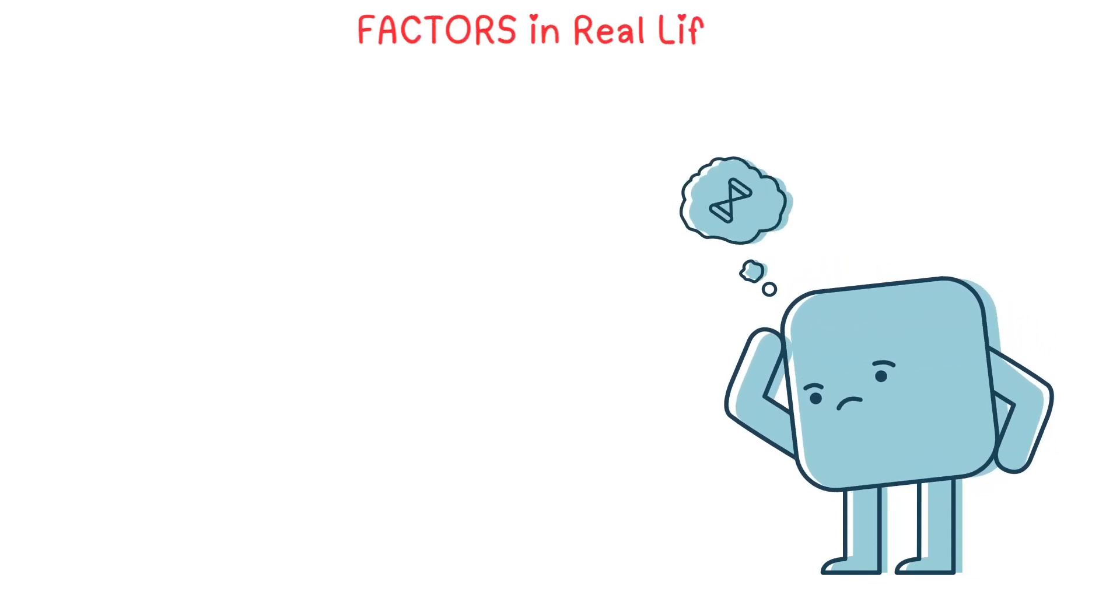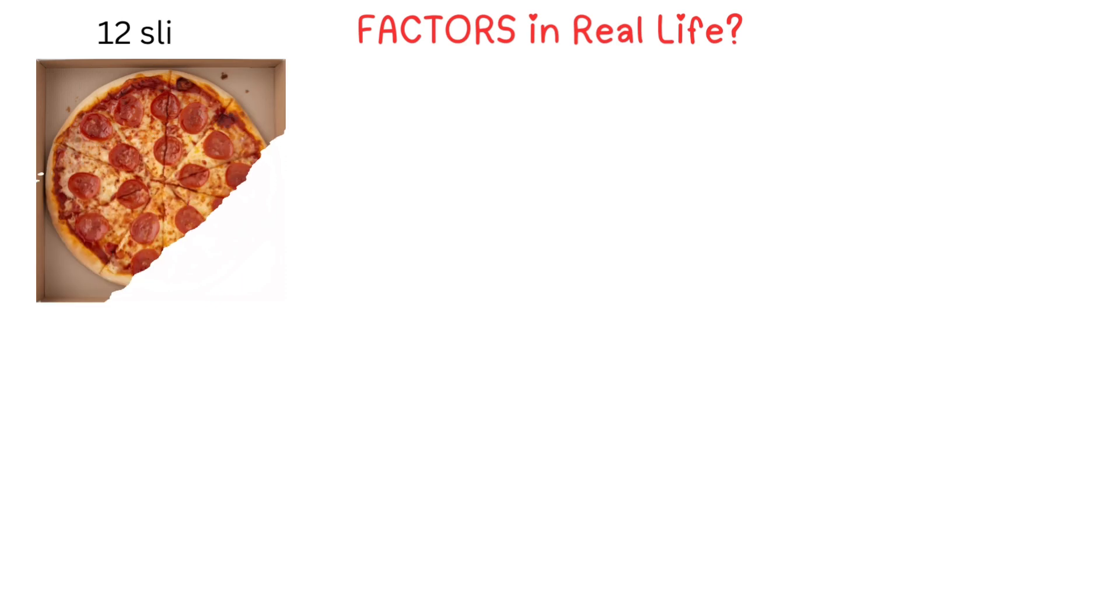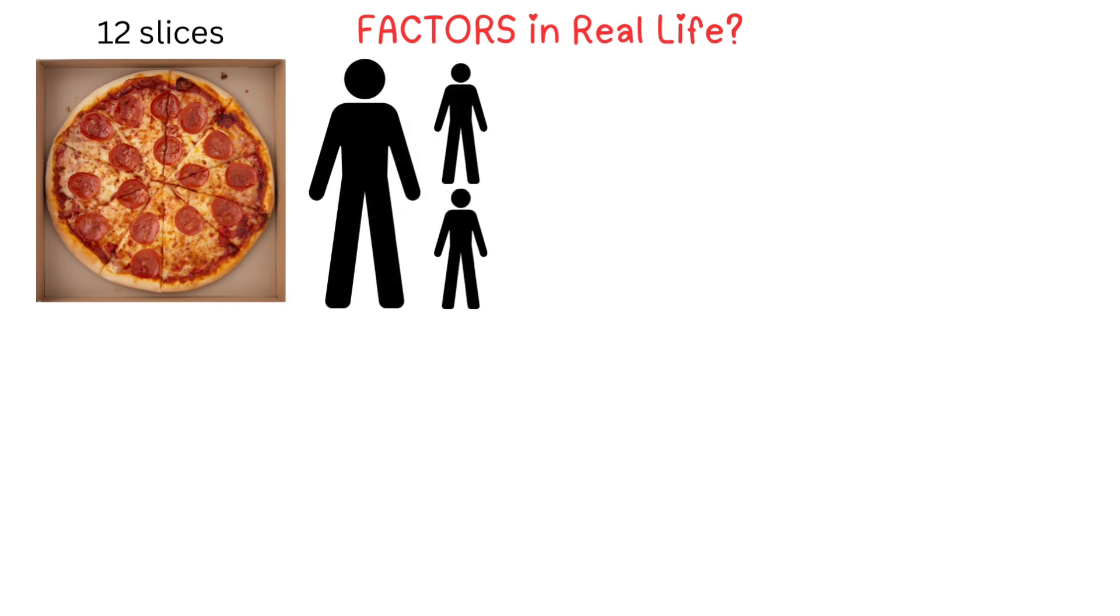If you're thinking how is this relevant to real life? Imagine you ordered a pizza with 12 slices. Factors are the numbers of friends you can share the pizza with fairly, with no slices left over. You could share with 1, 2, 3,